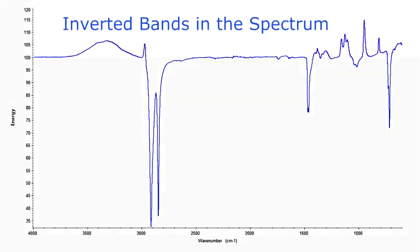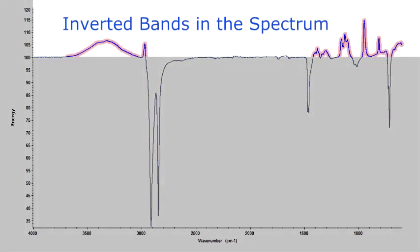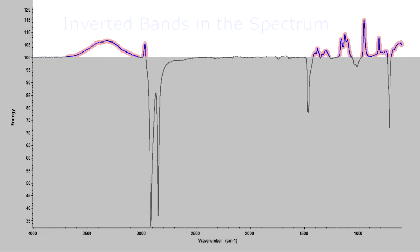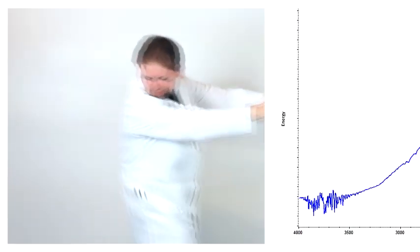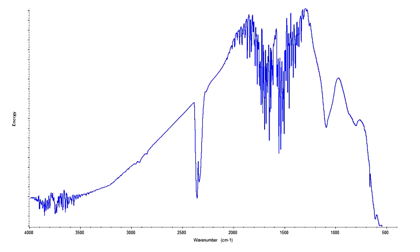When you have inverted absorption bands in a spectrum collected using ATR, the single beam spectrum is the first place to look when searching for the cause. We'll start with the single beam of the instrument with an empty sample compartment to understand the instrument's spectral features.